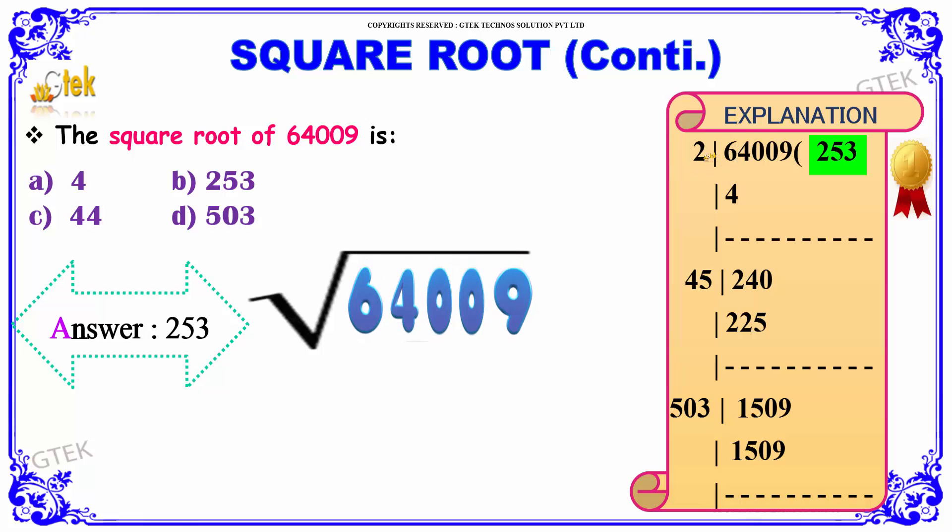So which of these squares have the value less than 6 or equal to 6? 2 into 2 is 4, which is less than 6, whereas 3 into 3 will be 9. It is greater than 6, hence we can't use it. So 2 into 2 is 4. Difference is equal to 2. Bring it down.